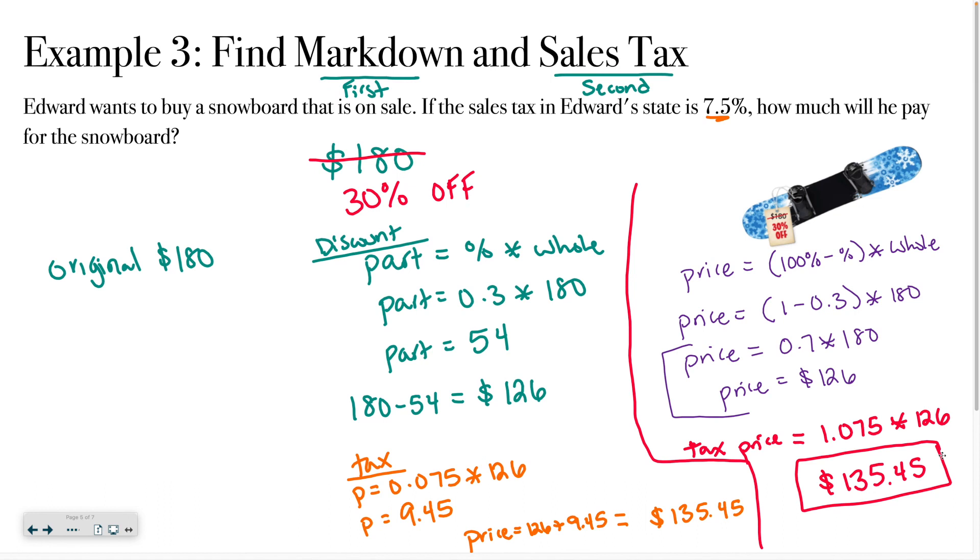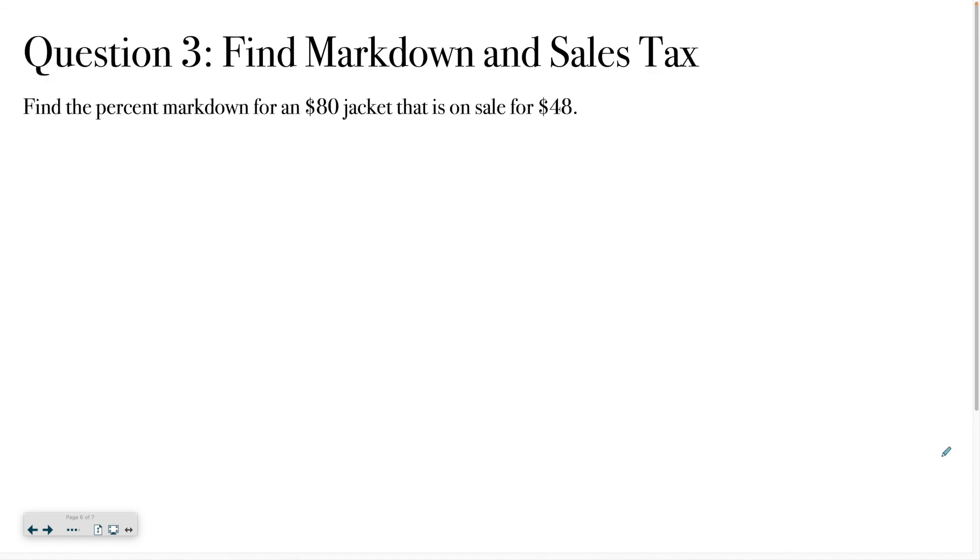Okay, so you can see I've shown you a couple of shortcuts. I've shown you ways that you can just be really consistent, even though it takes more steps. So pick what works for you. I want you to try this problem on your own. I want you to figure out just the percent markdown for an $80 jacket that is on sale for $48. So there isn't that second tax step on this one. Good luck.